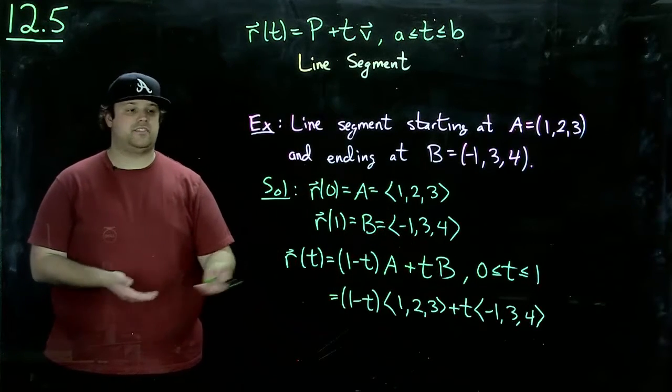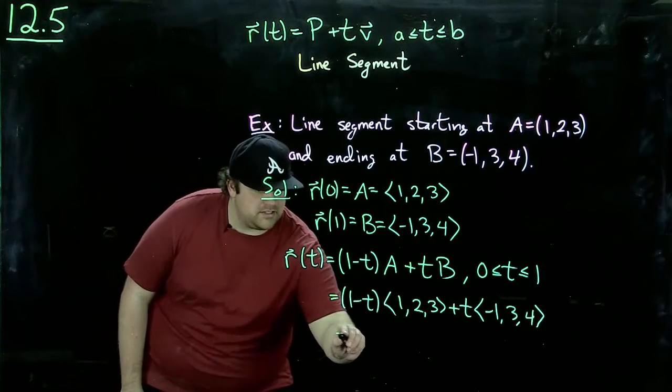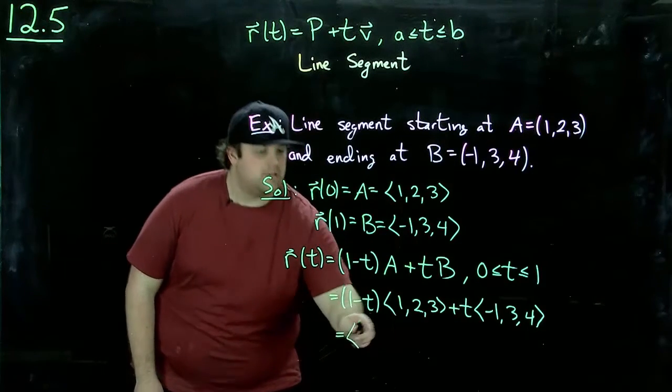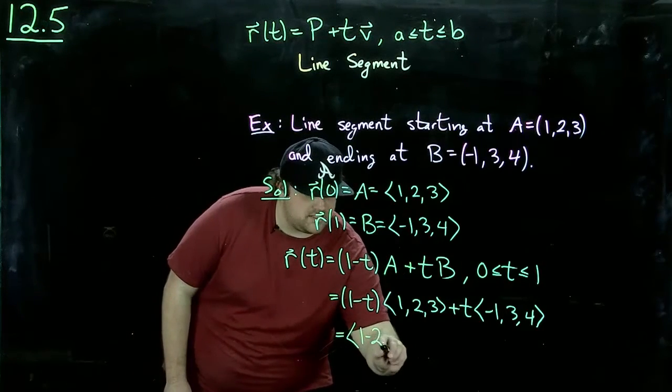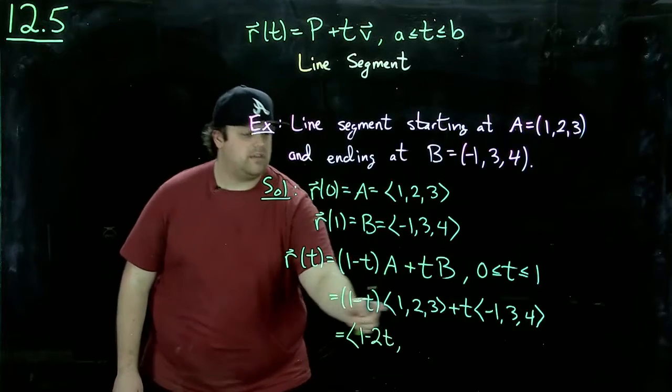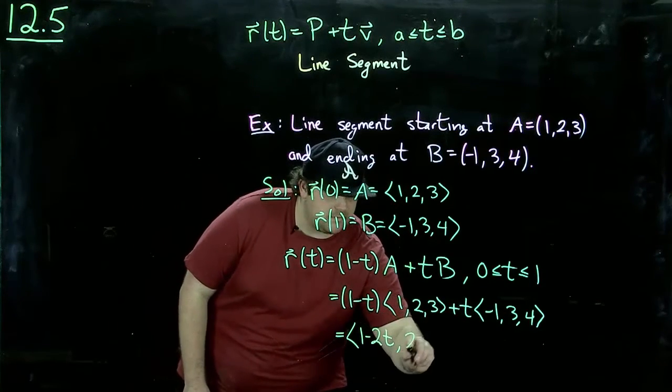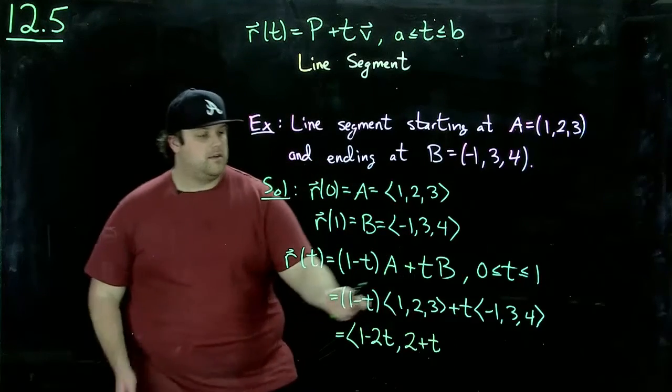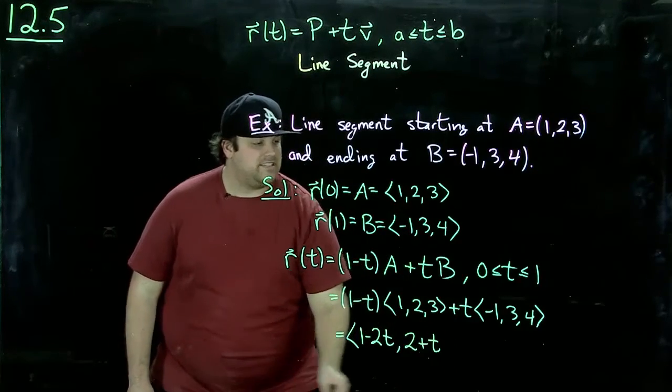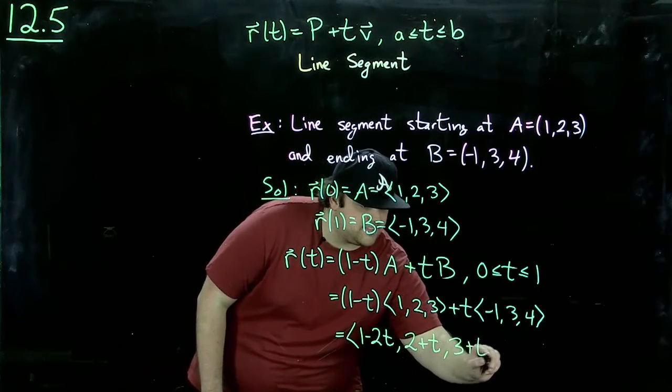And then now we can just multiply this out and combine them, if you like. So we have one minus t minus another t, so one minus two t. We have two minus two t plus three t, so that will be two plus t. And then three minus three t plus four t, so that will be three plus t.